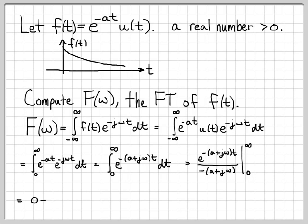So when I evaluate it at infinity, I get 0 because when I plug in t equals infinity, I get e to the minus infinity over some quantity a plus j omega. e to the minus infinity is 0. And then I have to subtract off this same quantity evaluated at 0. So when time is equal to 0, I get e to the 0, which is 1 on the numerator. And then on the denominator, there is no time variable. So I just simply have the quantity negative a plus j omega.